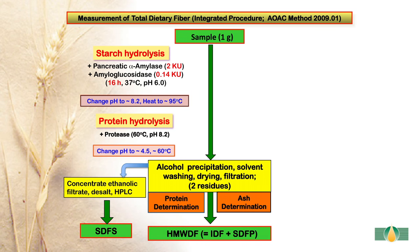The principle of the measurement of total dietary fibre using the integrator procedure is shown in this slide. The sample is incubated with pancreatic alpha-amylase and amyloglucosidase to affect starch hydrolysis. During this process, all non-resistant starch is hydrolyzed to glucose with traces of maltose. The pH is then increased to 8.2 before heating the sample to 95 degrees centigrade. The pH change is so that amyloglucosidase will have no action on the starch granules as they start gelatinising at the higher temperature.